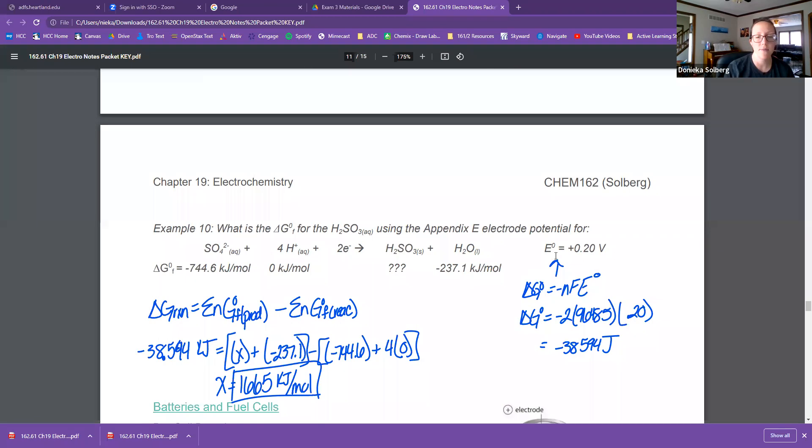So this equation here, I gave you that the E not of this cell is positive 0.20 volts, okay? So I know this E not, which means if I have the E not for a reaction, I can calculate delta G not for the reaction, negative NFE. Simple plug in.